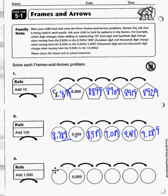In the third one, we're adding 1,000. So when we go back, we actually change the 8 to a 7. And now the hundreds, tens, and ones place stay the same. So now I have 9,889, 10,889, 11,889, and 12,889.